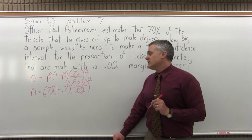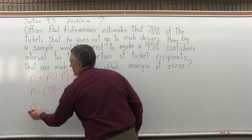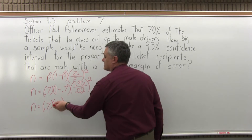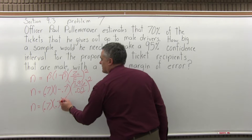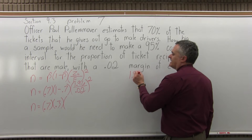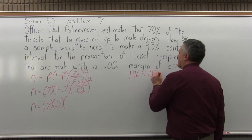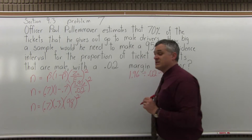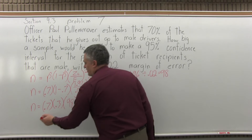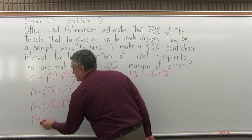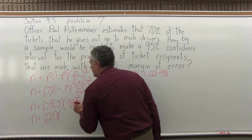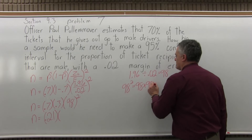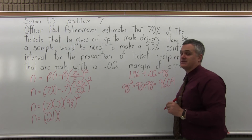Now that it's filled in, let's start to simplify. We have n equals .7 times 1 minus .7. That's .3 — 1 minus .7 is .3. The work in the parenthesis: I'll divide 1.96 by .02 off to the side, and you can let the calculator do that. It comes up to 98. Now that's going to be raised to the second power — don't forget the exponent. So n equals .7 times .3, which is .21, times 98 to the second power. 98 squared is 98 times 98, which is 9,604.